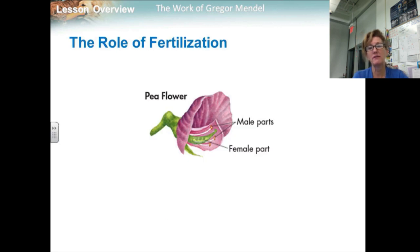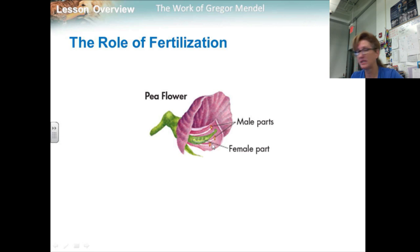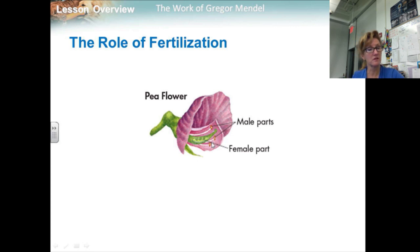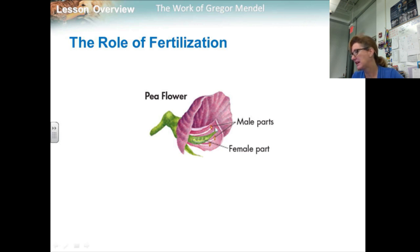Mendel knew that the male part of each flower makes pollen, which contains sperm — the male reproductive cells. Similarly, Mendel knew that the female portion of the flower produces reproductive cells called eggs. During sexual reproduction, the male and female reproductive cells join in a process known as fertilization to produce a new cell. In peas, this new cell develops into a tiny embryo encased within a seed. Pea flowers are normally self-pollinating, which means the sperm cells fertilize egg cells from the same flower.